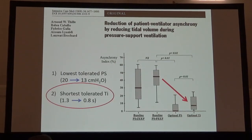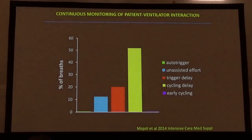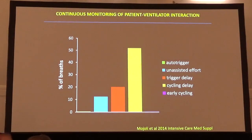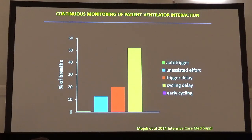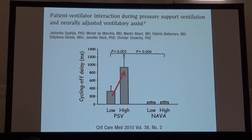Interestingly, in this study, shortening the mechanical inspiratory time was also effective in improving patient-ventilator interaction, probably because late cycling — a delayed opening of the expiratory valve — is so common during pressure support ventilation. In difficult-to-wean patients under prolonged pressure support ventilation, we observe a delayed opening of the expiratory valve in more than 50% of breaths.